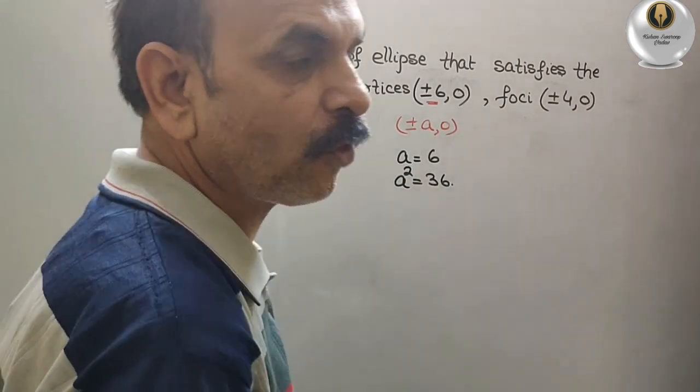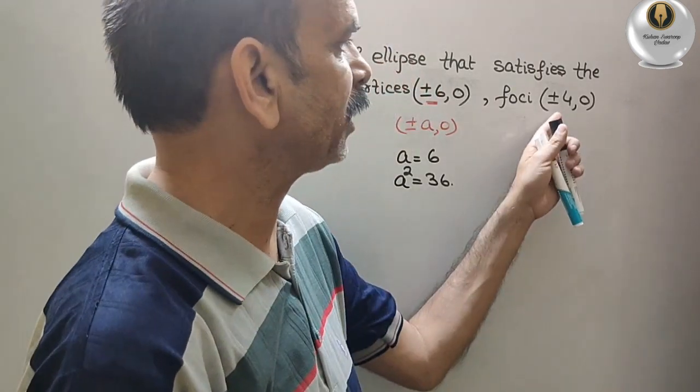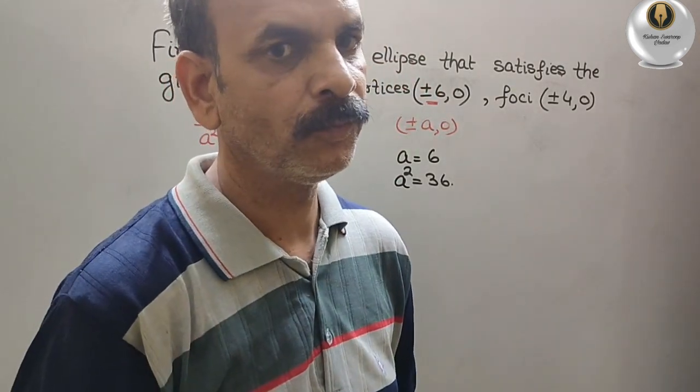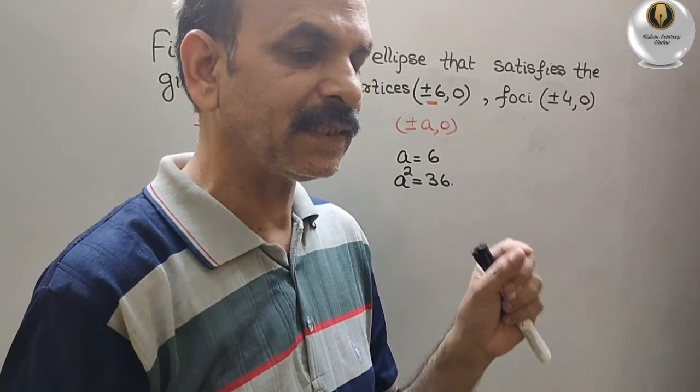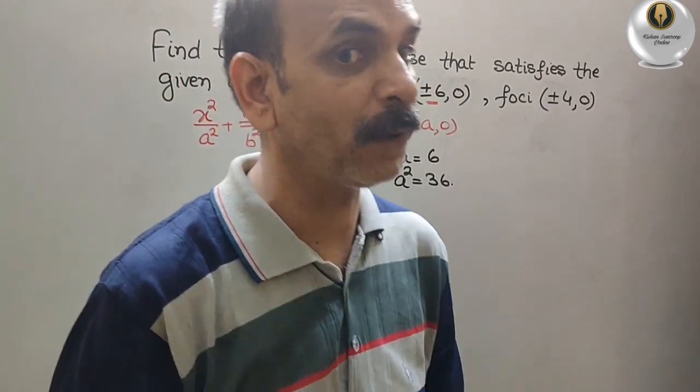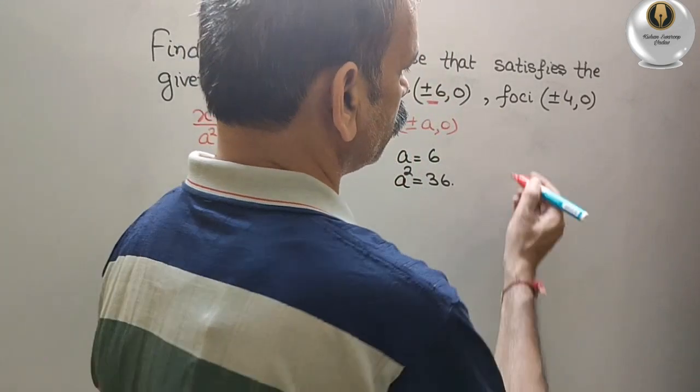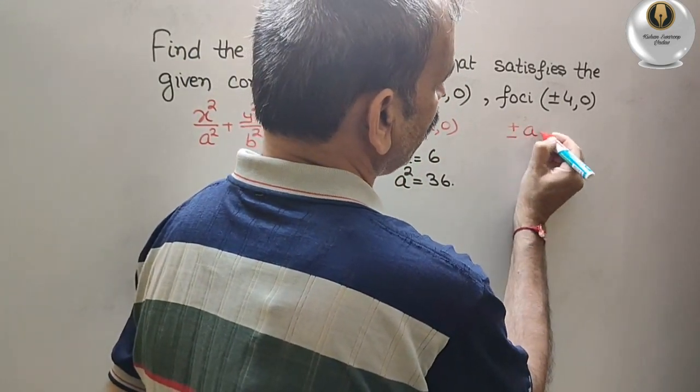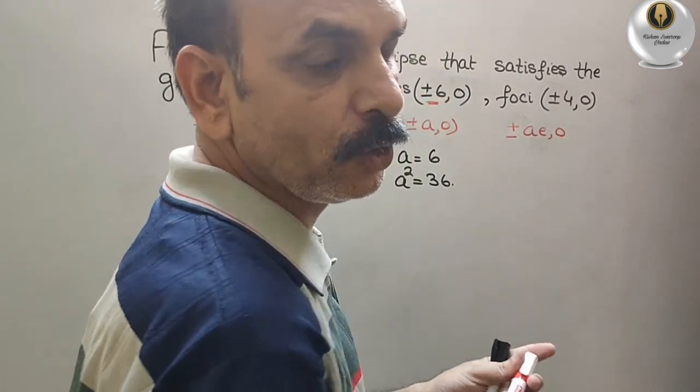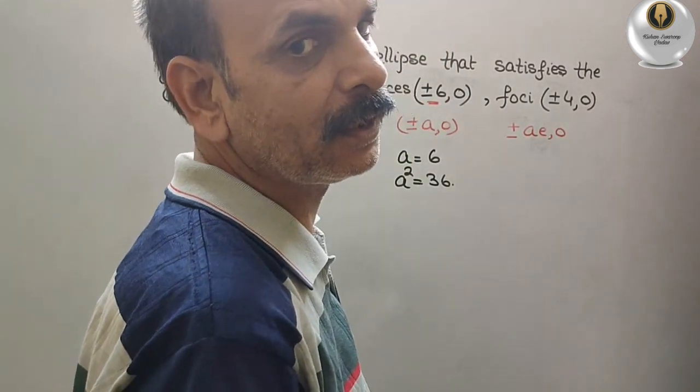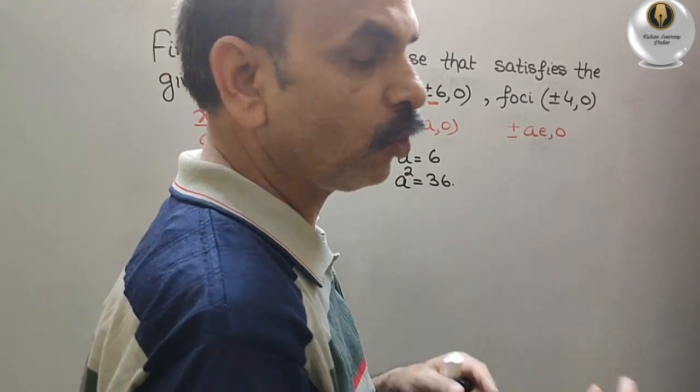Now, foci is plus minus 4 comma 0. So what is the foci? We can say it is plus minus ae comma 0. Now, if you compare it, you will get ae is 4.